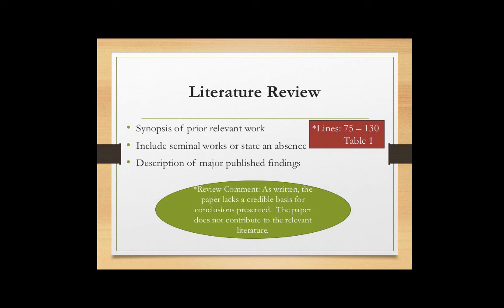When working on the literature review, you want a synopsis of prior relevant work. Include seminal works — or state an absence of them if there are none — and provide a description of major published findings as well. You'll build off these later when you do your analysis and conclusion sections, showing how your work deviates from or supports previous work. These are the types of sentences you'll need later, and you're setting the stage for them here in the literature review. Examples are provided in the next slides, including a table in the sample paper.